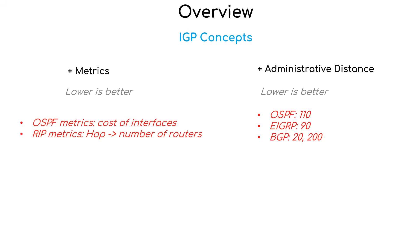About administrative distance — the router chooses the route with the lowest administrative distance (AD) value if it has multiple routes learned from different protocols. For example, if the router has two routing protocols, OSPF and EIGRP, and it learns one subnet from the neighbor using both routing protocols, we choose the route learned from EIGRP because the EIGRP route has a lower AD. Each protocol has a different AD value. For example: OSPF has an AD of 110, EIGRP has an AD of 90, and BGP has an AD of 20 and 200 — 20 is for EBGP and 200 for IBGP.